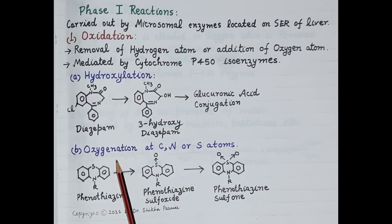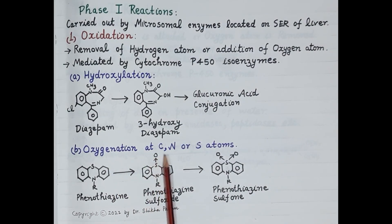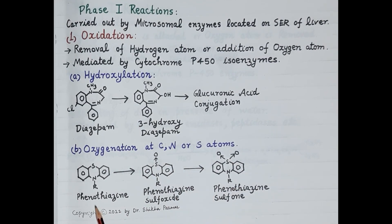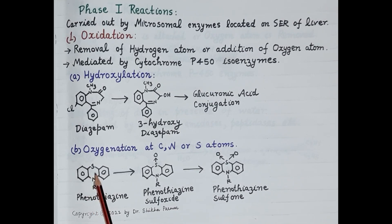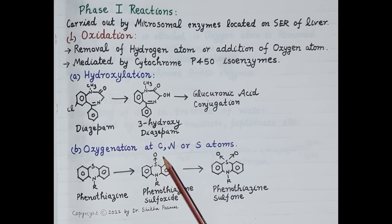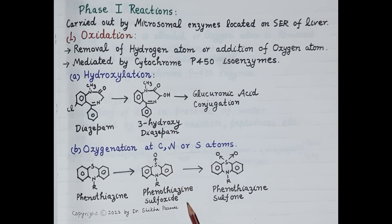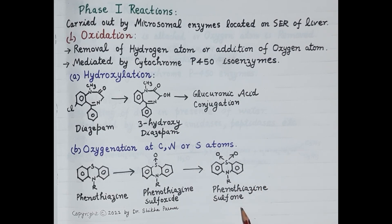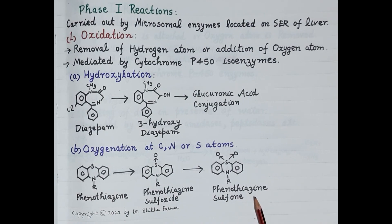The second type of oxidation reaction is oxygenation at carbon, nitrogen, or sulfur atom. Look at the structure of phenothiazine — it is oxidized at the sulfur atom. That is, there is addition of an oxygen atom to the sulfur atom to produce slightly polar phenothiazine sulfoxide. It is further oxidized to produce a more polar metabolite, phenothiazine sulfone, which is easily excreted from the body.